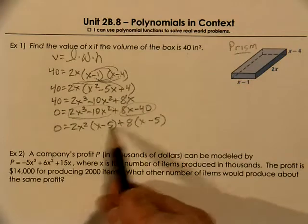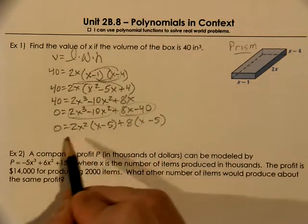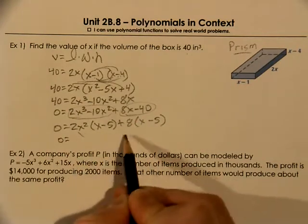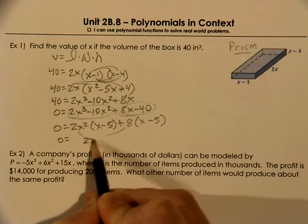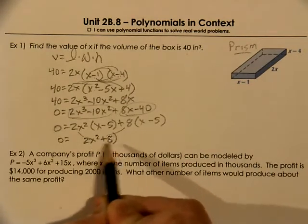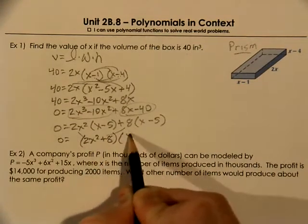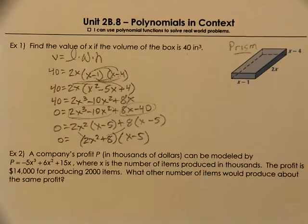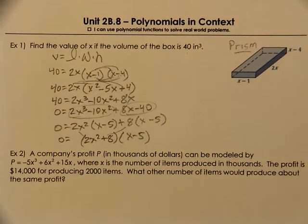So yes, inside the parentheses is x minus 5. Then you bring down your 2x squared and your 8 and bring down your x minus 5. So we use factor by grouping to break this one apart.